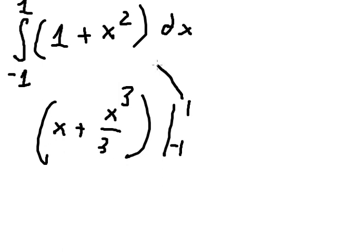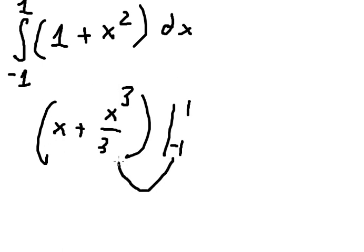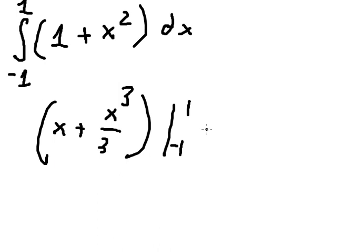So I will put number one and negative number one as the bounds for dx, and we have eight over number three. This is the final answer. Thank you for watching.